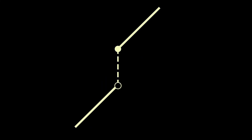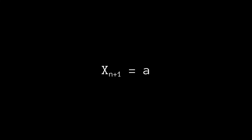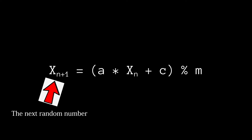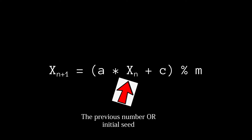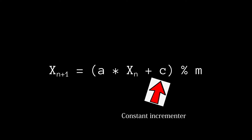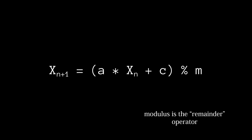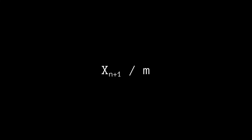Let's take a look at a PRNG known as the Linear Congruential Generator, or LCG for short. The LCG works by utilizing a discontinuous piecewise linear function, which sounds really complicated but it just means a line that is not continuous. The generator is defined by the recursive relation x of n+1 equals a times x of n plus c, mod m, where x of n+1 is the next random number, a is a multiplier constant of the previous random number or initial seed, c is a constant incrementer, and m is a constant that modulates the resulting number into a given period. Additionally, I like my random numbers in the range of 0 to 1, so we can divide this entire result by m to get that range.